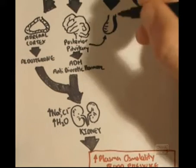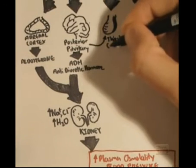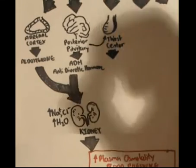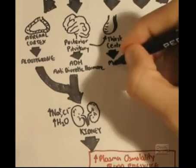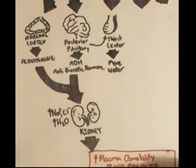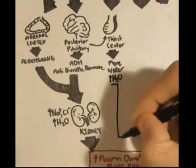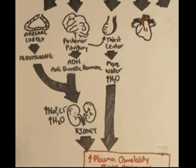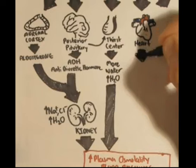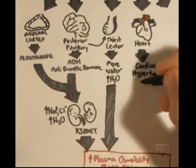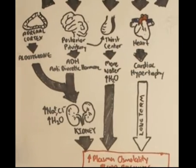Angiotensin 2 also causes the brain's hypothalamus to stimulate the thirst centre. The thirst centre causes us to drink more water, causing an increase in blood pressure. Additionally, the heart is also targeted, which may cause hypertrophy — meaning increased muscle mass of the heart — but this is usually long term.